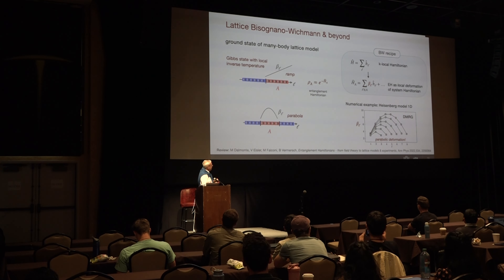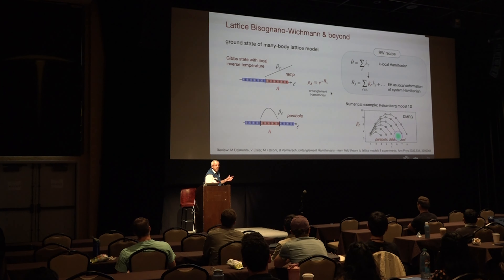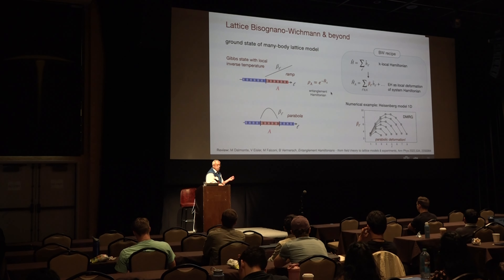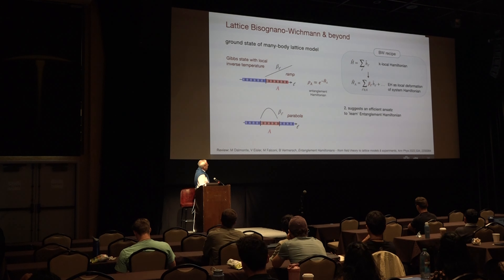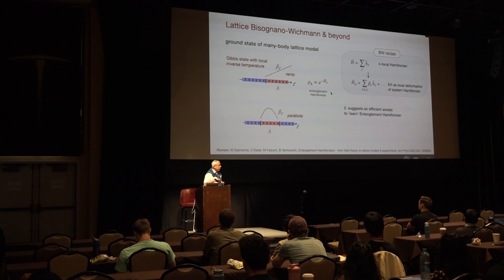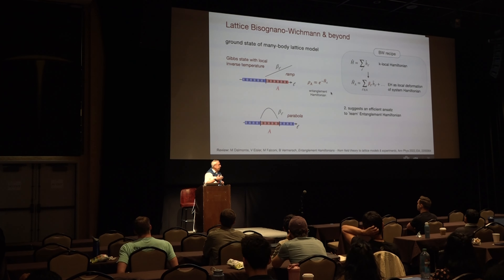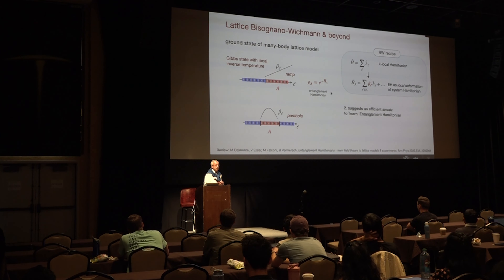You can test this in analytical models — like the standard Ising model with nearest-neighbor coupling, where this is an exact analytical result. You can also do numerics for the ground state of the Heisenberg model I talked about before, and you see a beautiful parabola. So the structure of the entanglement Hamiltonian is very often rather simple, even though the density matrix itself would be very complicated.